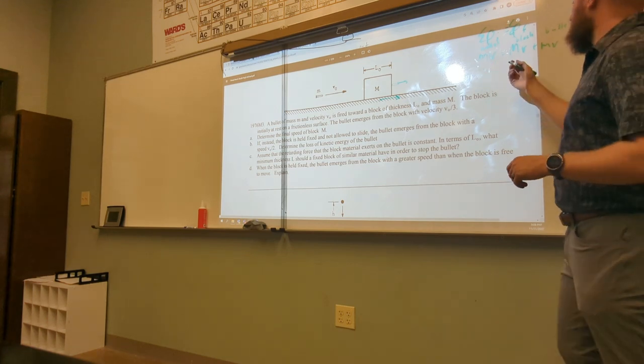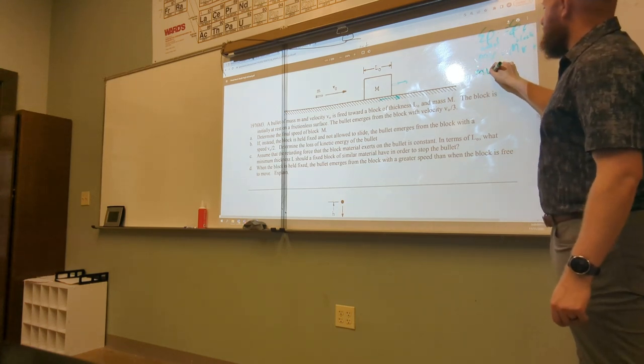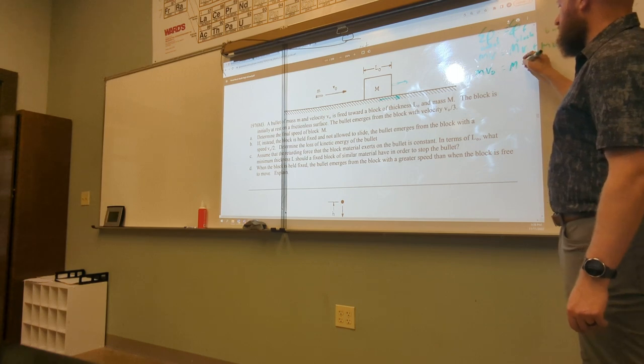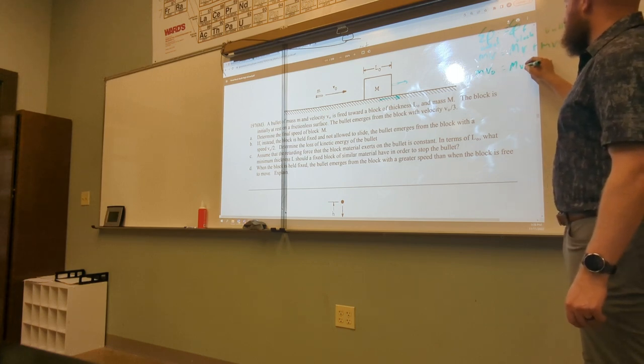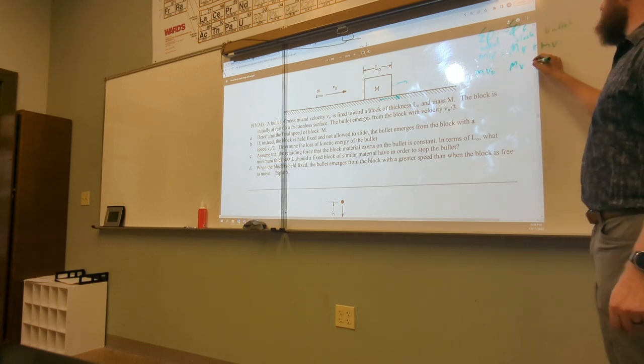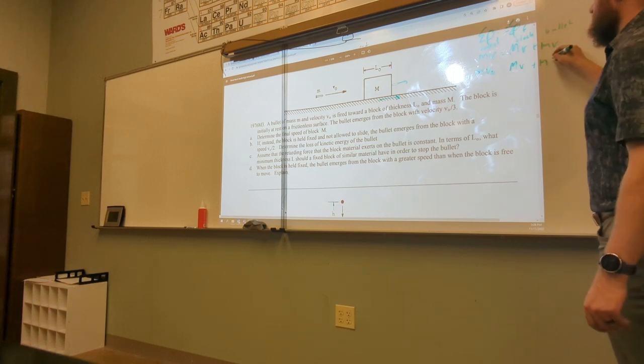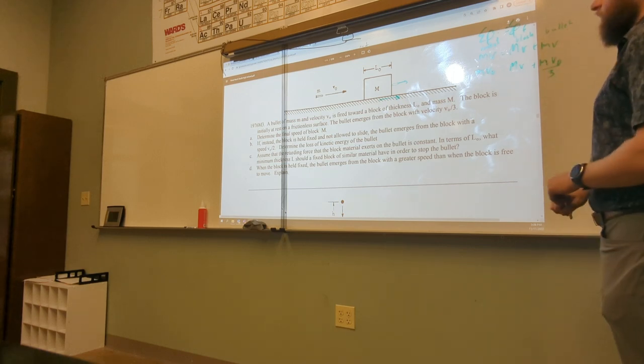So let's actually make sure we get the right variables. So I have M V naught equals M V, right, this is my question mark, this is what I need to find, and then plus m V naught divided by 3.